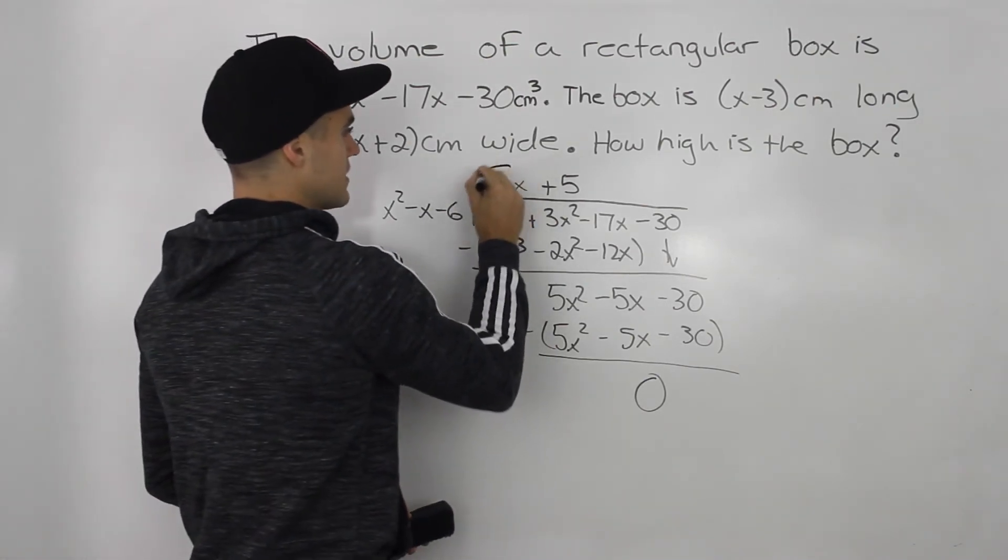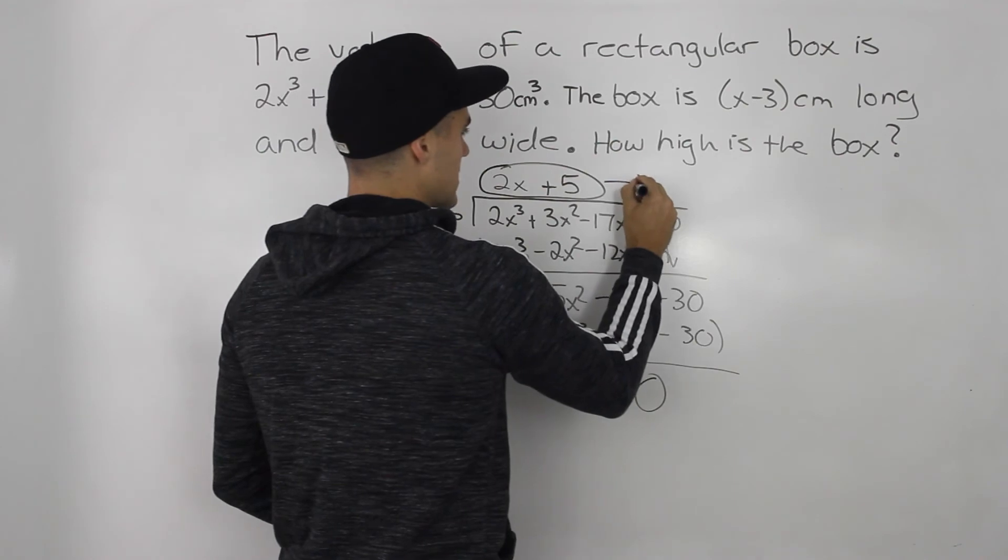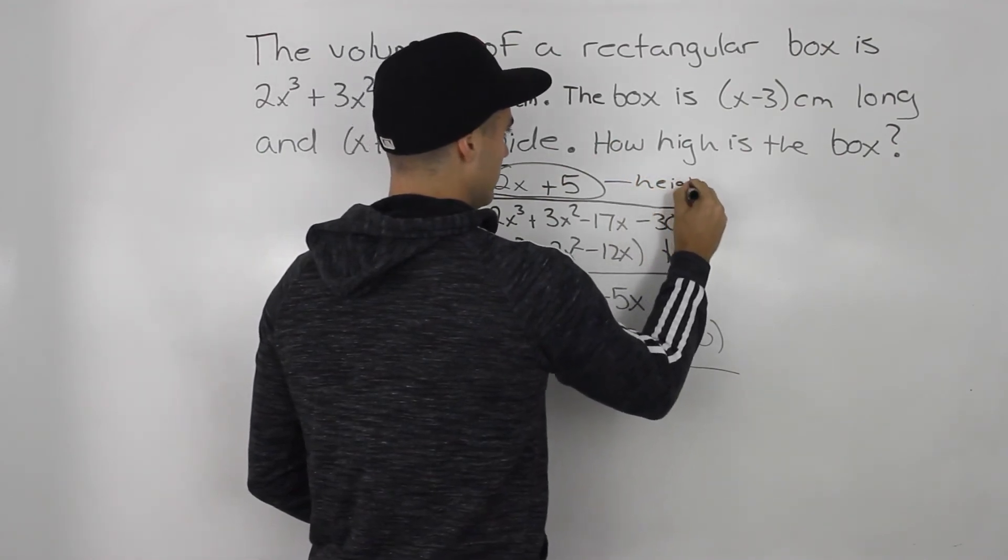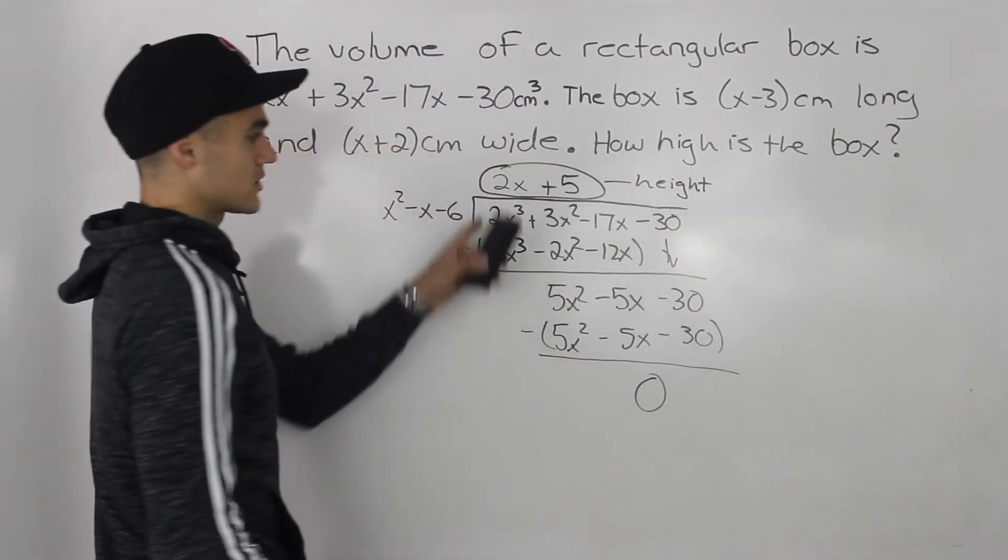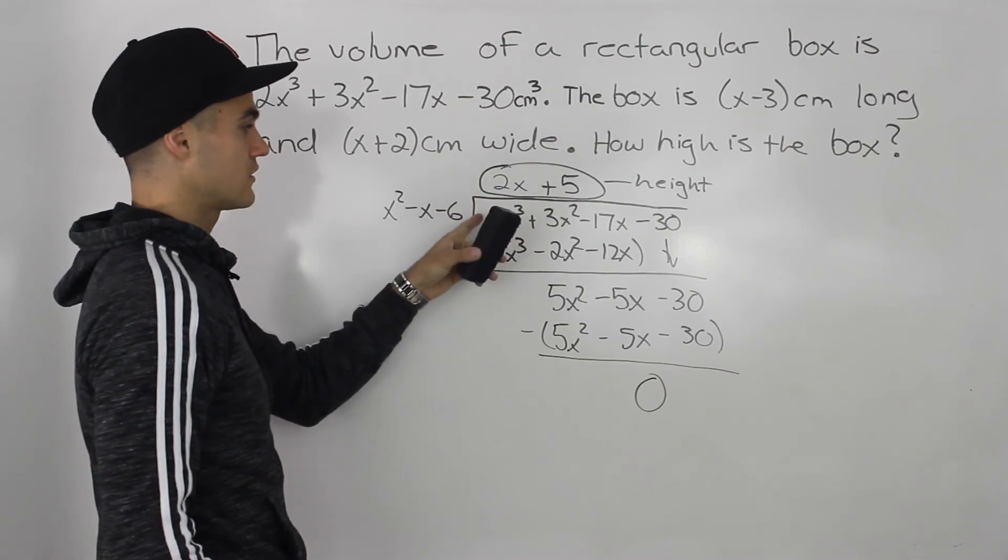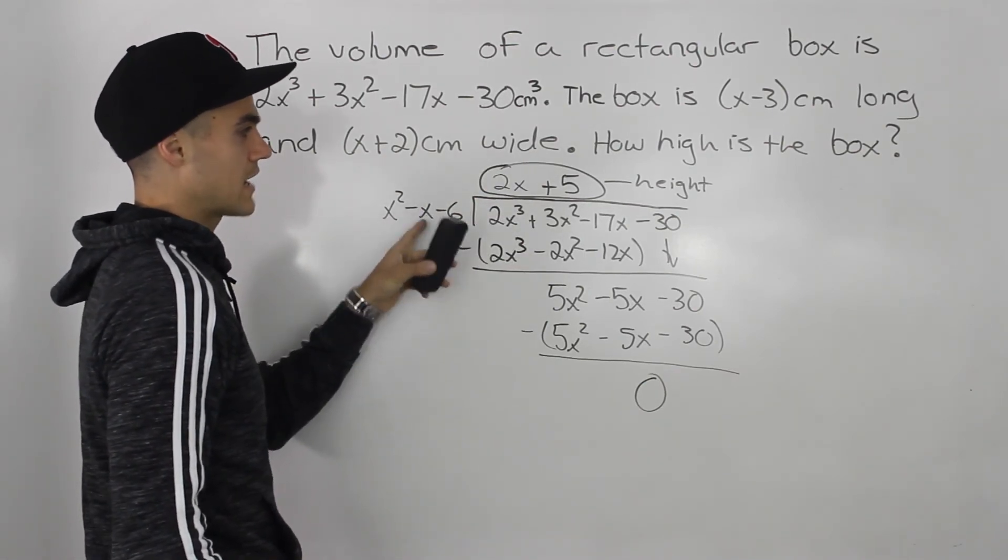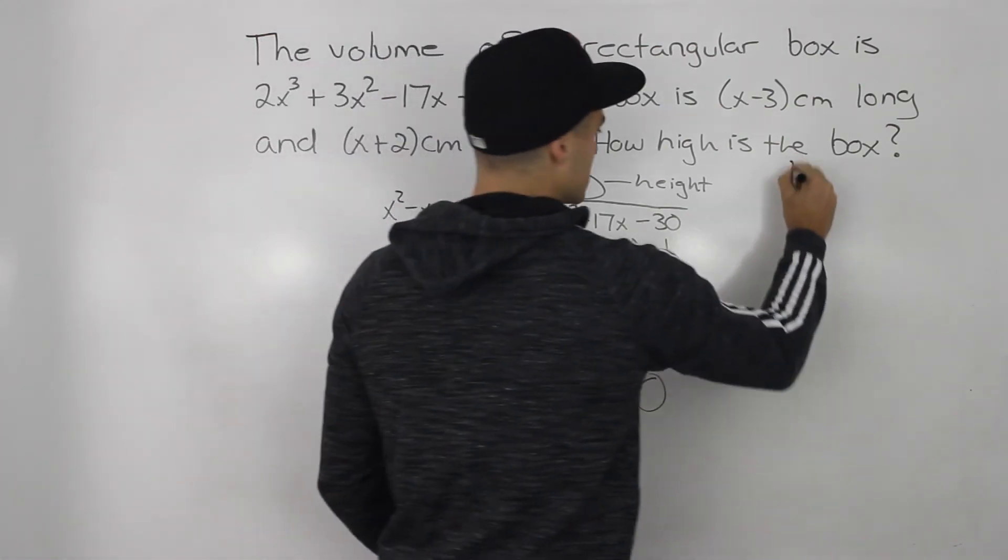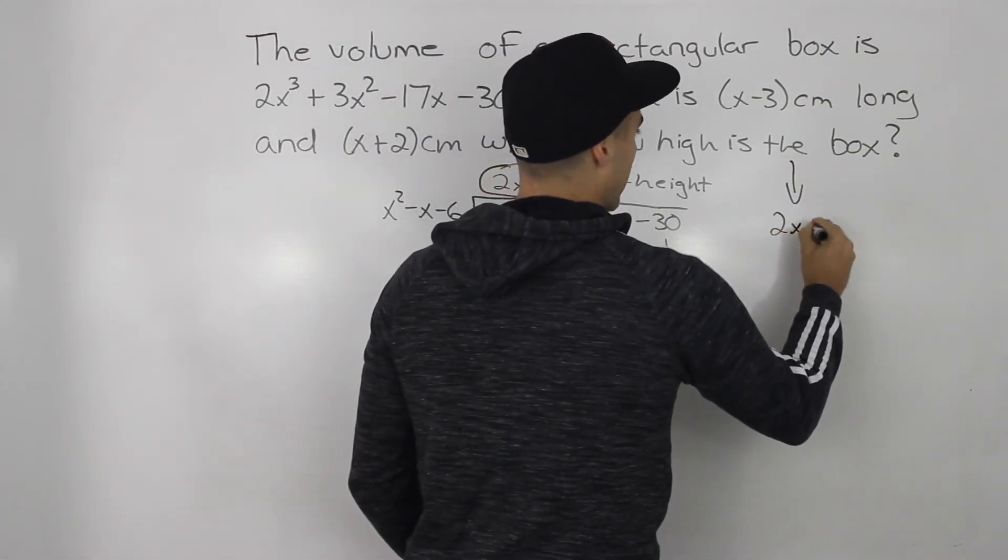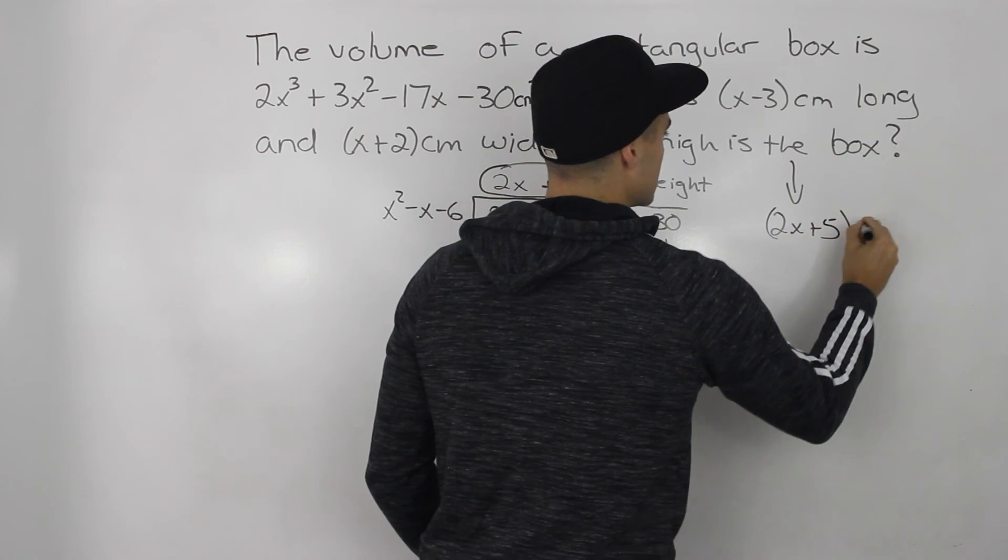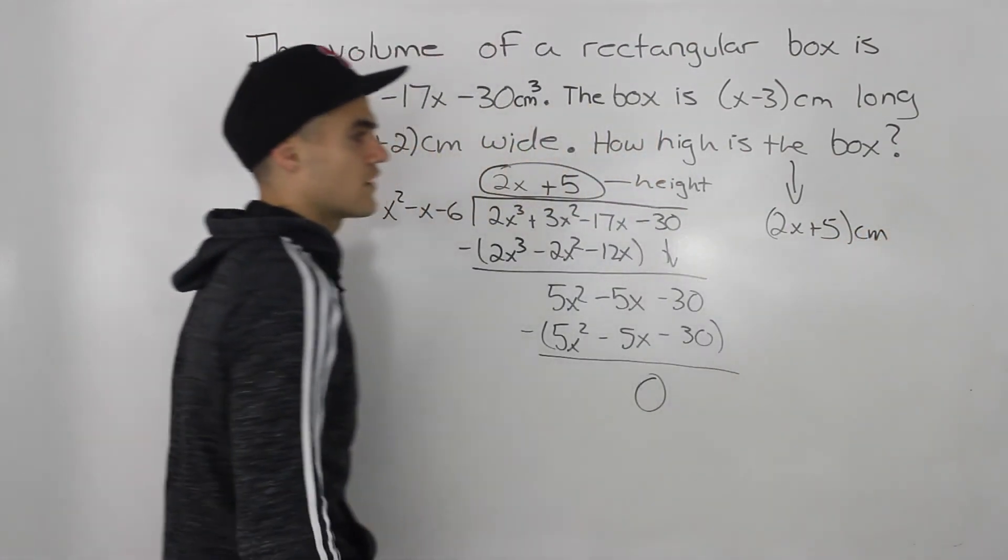So this here is our answer. This is the height. It's the quotient that you get from dividing the volume by the length times the width. So how high is the box? Well, it is (2x+5) centimeters. And that is your final answer.